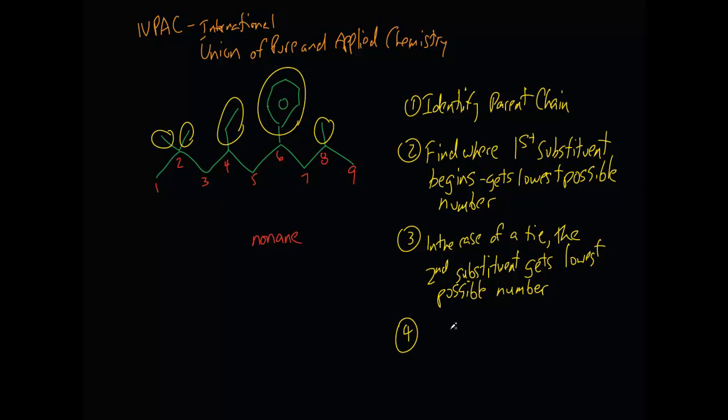And then after that, what we do is we just, when we're writing the name, we just list in alphabetical order, right? List her name in alphabetical order. In other words, we have our parent chain now. And what I'll do is maybe off to the side, I'll just list our substituents.